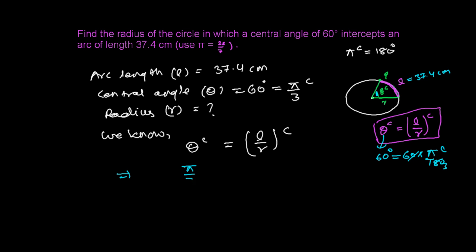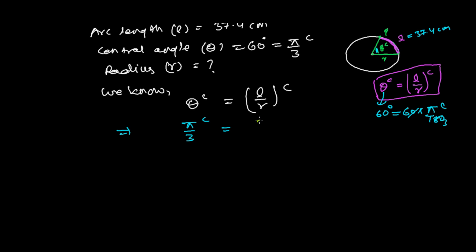θ is π/3 radians, and the length is 37.4 divided by radius r. Both sides are in radians, so we can equate them.